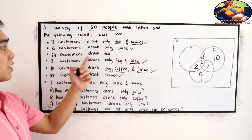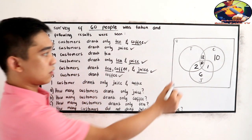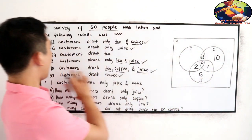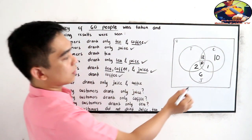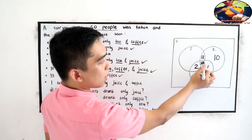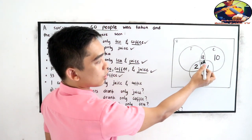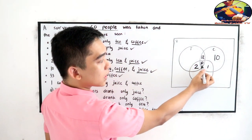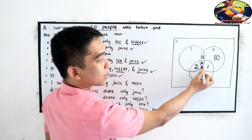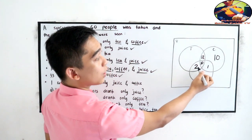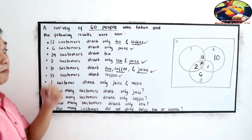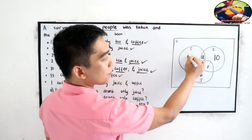29 customers drank tea. So for tea, we have 29. So we need to less the given 12, 10, and 2. So 12 plus 10, that is 22, plus 2, 24. So 29 minus 24, this will be 5.